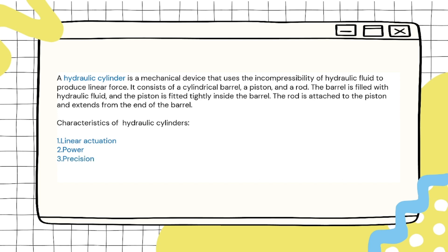Precision: hydraulic cylinders can be controlled very precisely, allowing for precise positioning of objects. Durability: hydraulic cylinders are built to withstand harsh conditions and heavy use. Versatility: hydraulic cylinders are used in a wide range of applications including construction, manufacturing and transportation.